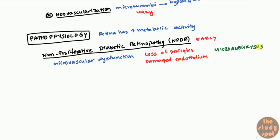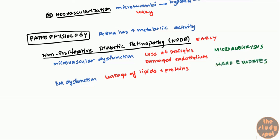You also get basement membrane dysfunction. When you have basement membrane dysfunction, you have leakage of lipids and proteins. When lipids and proteins leak, this shows up as hard exudates — these tend to be yellow-type exudates that you'll see. These findings written in green are all the findings you'll see on fundoscopy.